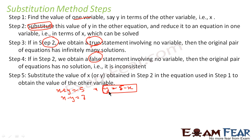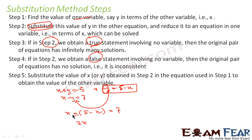Now I'll substitute this value of y into the second equation. So x minus y becomes x minus (5 minus x) equals 7. This is now one equation entirely in terms of x. Solving it: 2x minus 5 equals 7, which gives 2x equals 12, so x equals 6.